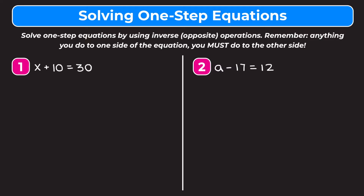In example 1 we have x plus 10 is equal to 30. When solving one-step equations our goal is to get the variable by itself, so we're trying to get x by itself. In order to do that we have to get rid of this plus 10 on the left side of the equation, and that's where the first tip comes in handy — we have to use inverse or opposite operations.